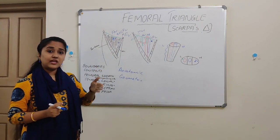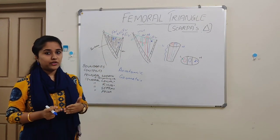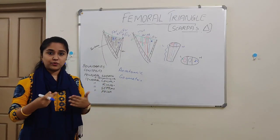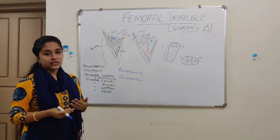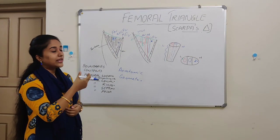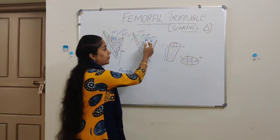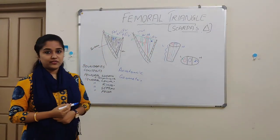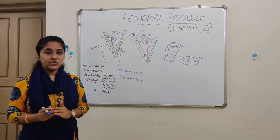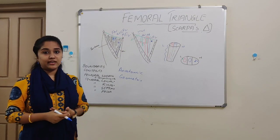The fascia transversalis is a continuation of the deepest layer of the anterior abdominal wall, and the fascia iliaca — that is the posterior layer — is the fascia covering the iliacus muscle. The two layers form the femoral sheath enclosing the upper 3 to 4 cm of the femoral vessels. The femoral nerve is not included within the femoral sheath because it is passing behind the fascia iliaca.